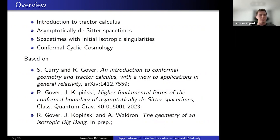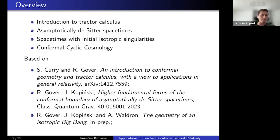I will start with asymptotically de Sitter spacetimes and talk about the way in which their end state can be characterized in terms of constraints relating the geometry of future infinity with the stress-energy tensor. Then I'll move to spacetimes with initial isotropic singularities and explore the geometric implications of the assumption that spacetime possesses such an initial singularity, and try to characterize the initial state with respect to constraints relating the geometry of the initial hypersurface with the matter content.